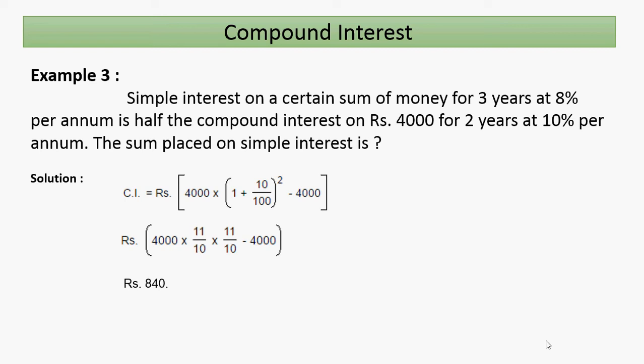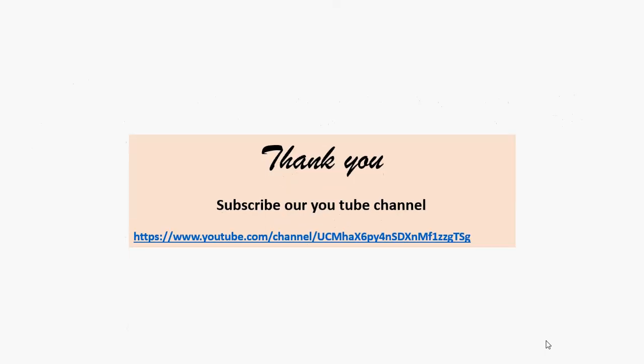Since the simple interest is half the compound interest, SI = 840 / 2 = rupees 420. Now using SI = P × R × T / 100: 420 = P × 8 × 3 / 100, so P = 420 × 100 / (3 × 8) = rupees 1,750. That is our answer. If you like our video, please subscribe to our YouTube channel.